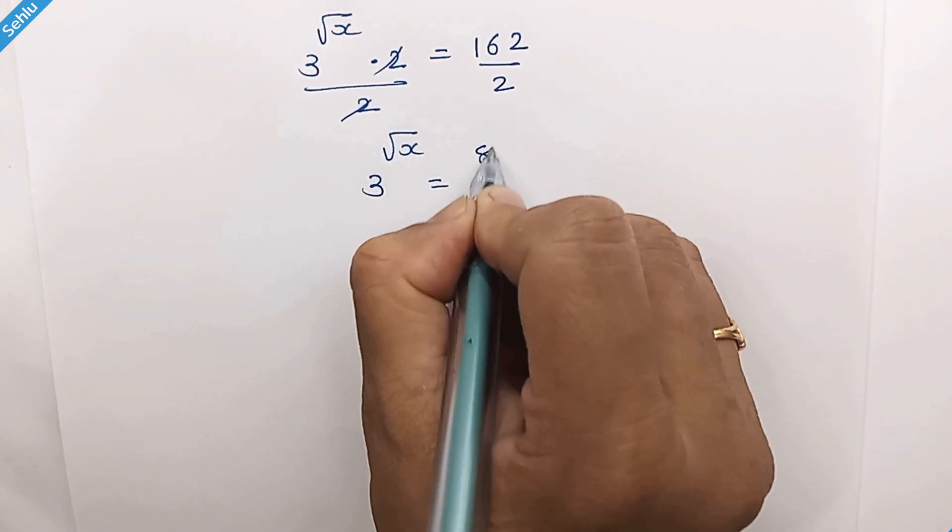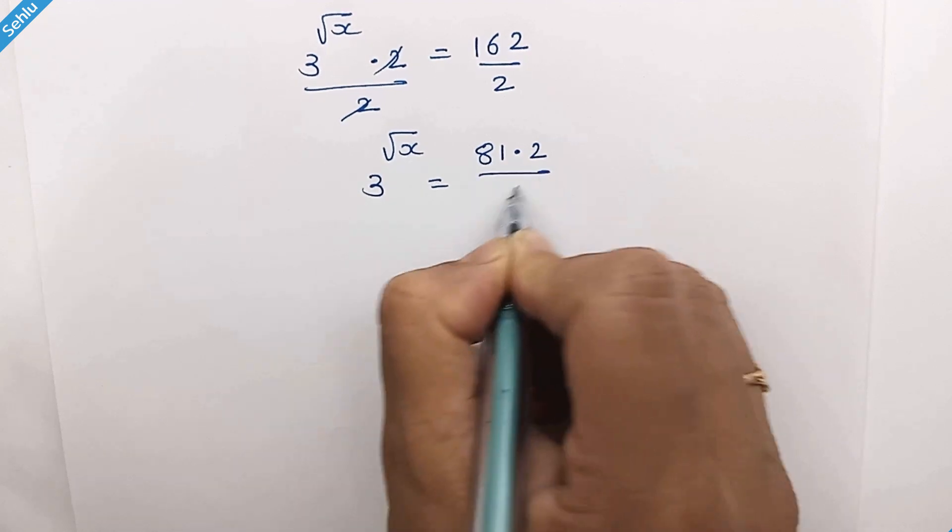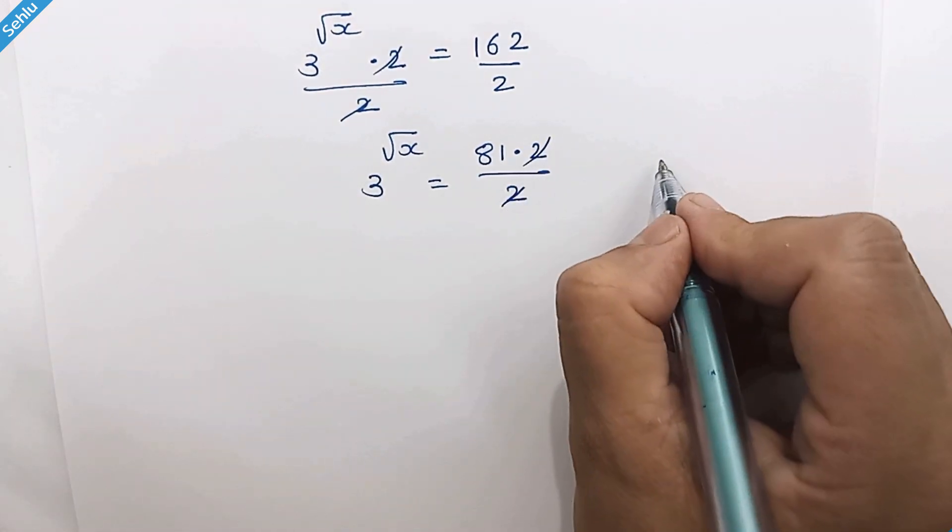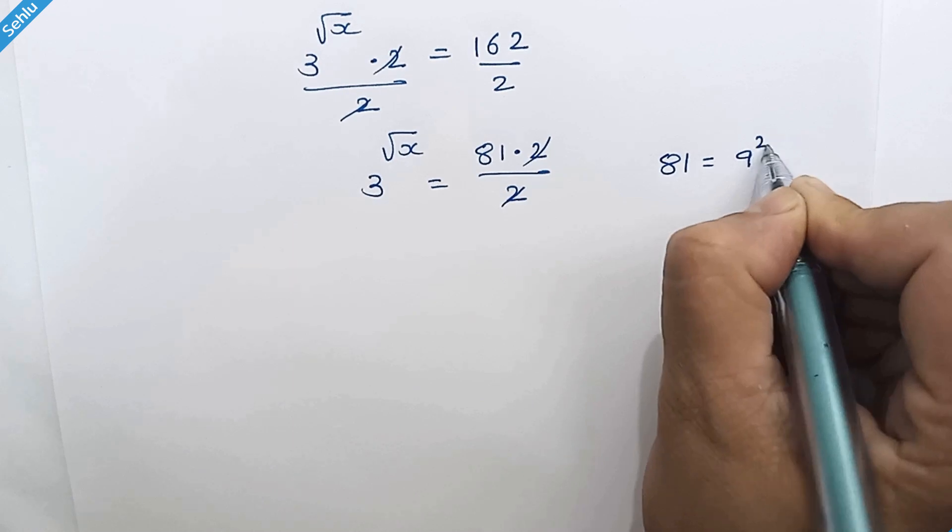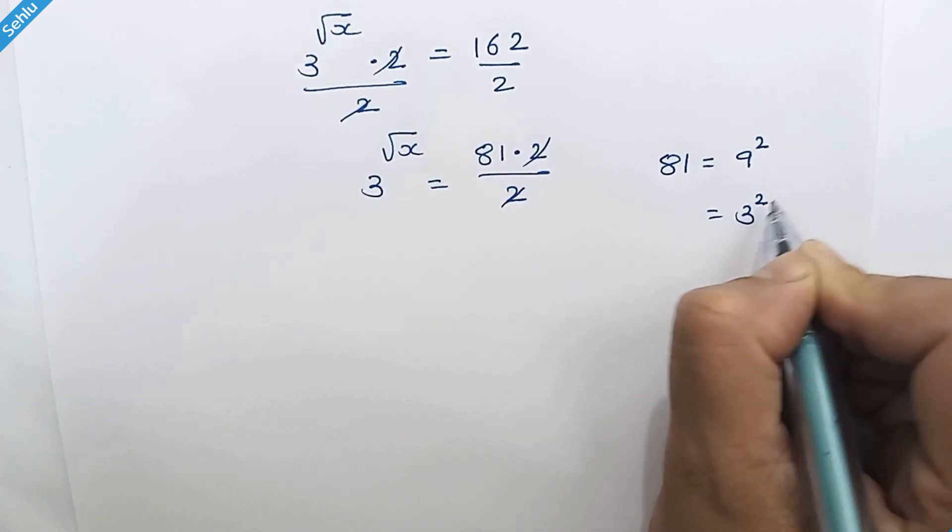And 162 is 81 times 2, so this 2 gets cancelled out. 81 is 9 squared, and 9 is 3 squared.